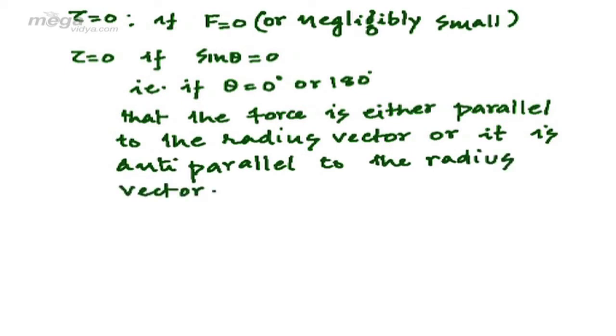For example, we can say centripetal force. Since centripetal force is acting along the radius vector, it will not impart any torque on the particle.